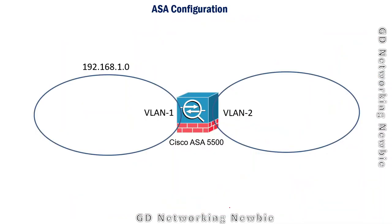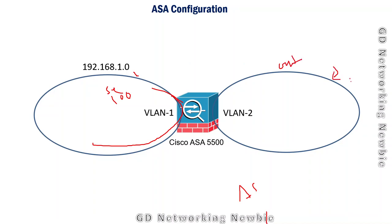For ASA configuration, we will cover that in our next video where we configure some ports into specific VLANs and assign different security levels — 100 for inside, 0 for outside — and define a third interface for DMZ. We will then configure the ASA firewall with different policies to allow or block traffic. For this video, we just covered the very basics about ASA firewall. Hoping this was helpful, and hope to see you in another video. Thank you.